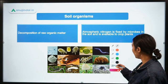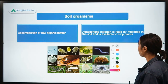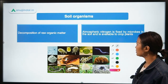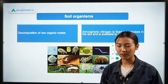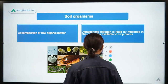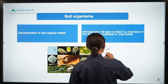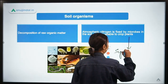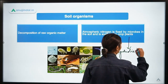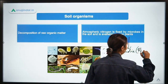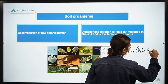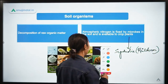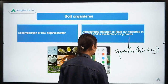The second role is that atmospheric nitrogen is fixed through these microbes in the soil, making it available to crop plants. This can be done through symbiotic processes — for example, through Rhizobium, which is an example of a symbiotic association to fix nitrogen.